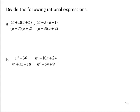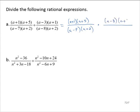The first thing we'll do is rewrite this as multiplication by the reciprocal. So this is equivalent to (a+1)(a+5) over (a-7)(a+2), times the reciprocal of the second fraction: (a-8)(a+2) over (a-3)(a+1).